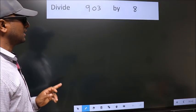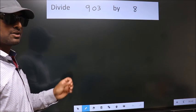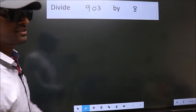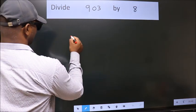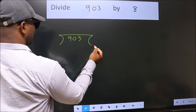Divide 903 by 8. To do this division, we should frame it in this way. 903 here, 8 here.